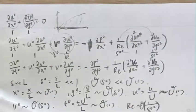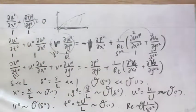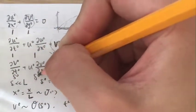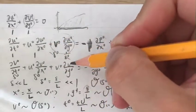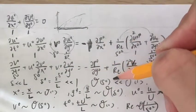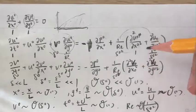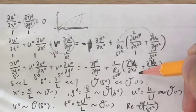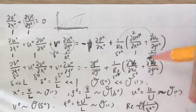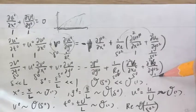Now the third equation — the NS equation in the y-direction. For the term dv-naught/dt-naught: t-naught is 1, v-naught is delta-naught, so this term is order delta-naught. The convective terms u-naught times dv-naught/dx-naught: 1 times delta-naught over 1 gives delta-naught. And v-naught times dv-naught/dy-naught: delta-naught times delta-naught over delta-naught gives delta-naught. So the entire left-hand side of the y-direction equation is of order delta-naught. The viscous term gives order delta-naught cubed, and the remaining term gives delta-naught times 1 over delta-naught — order 1.